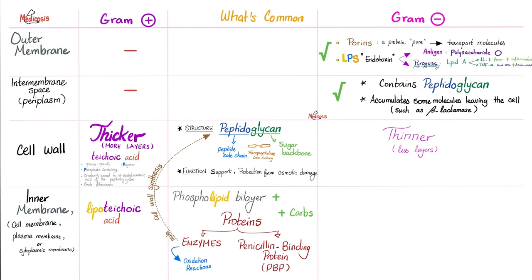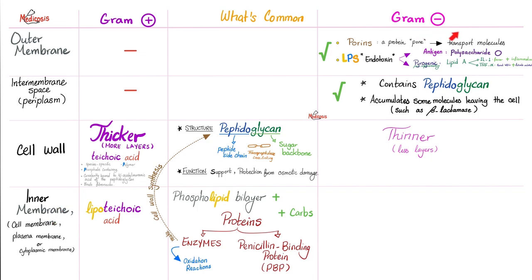Gram-positive bacteria do not have an outer membrane, but gram-negative do. The outer membrane is lipid and includes LPS — lipopolysaccharide — which acts as an endotoxin and antigen, including the polysaccharide O-antigen, against which you secrete antibodies. LPS is also pyrogenic, meaning it causes fever. Since gram-negative has an outer membrane, there is an inner membrane and therefore a periplasm or inter-membrane space, which contains peptidoglycan. Both gram-positive and gram-negative have a cell wall, but it is very thick in gram-positive and thinner in gram-negative.